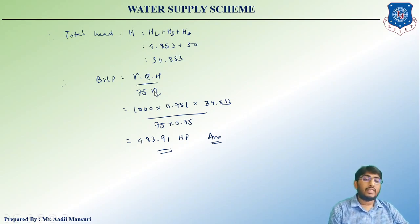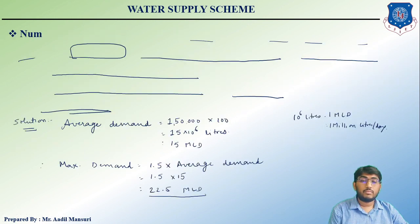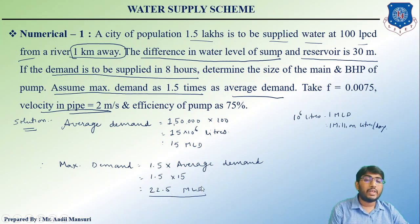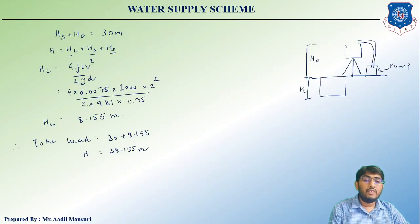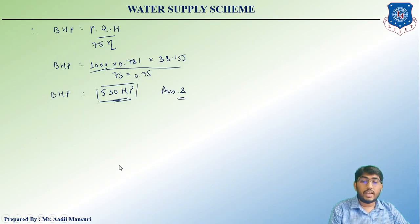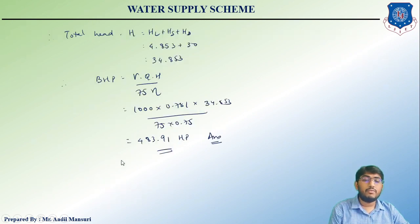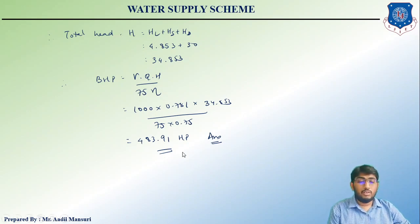In summary, to supply 22.5 MLD in 8 hours for a population of 1.5 lakh located 1 km away, the Darcy-Weisbach method gives BHP = 530 HP, while the Hazen-Williams equation gives BHP = 483.91 HP. We will start water treatment processes in the next video.